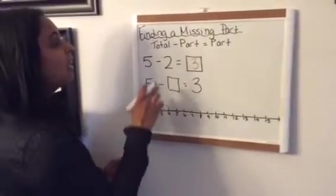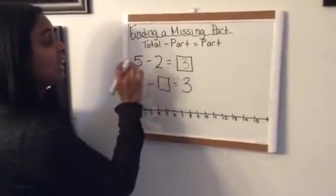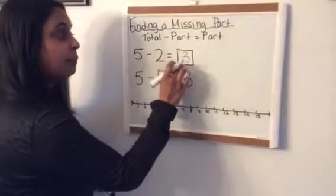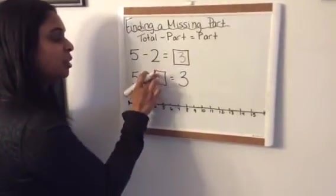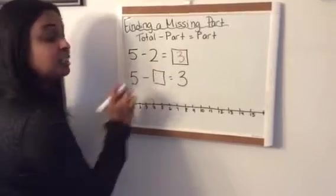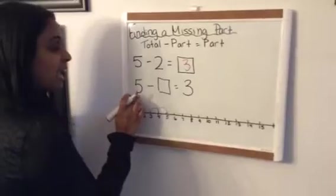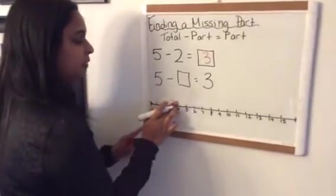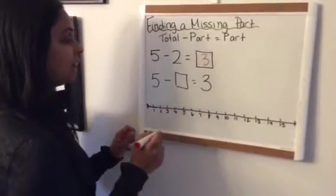All right, now in subtraction that you're going to see today, you're going to see sometimes the part at the end is missing, but sometimes they're going to show you the part in the question that's missing, and then that would be your missing part right here. So if I have five, how many do I need to take away to have three left over?